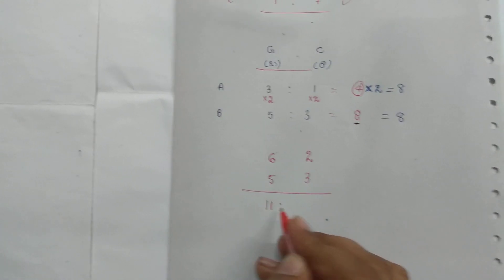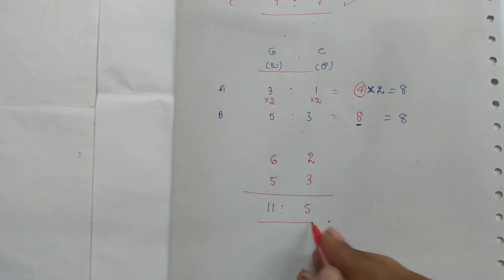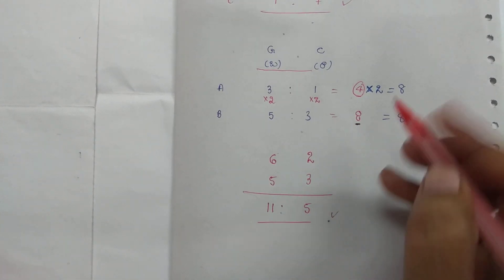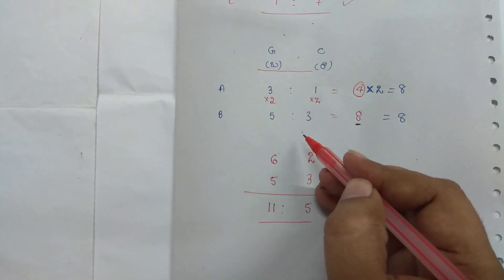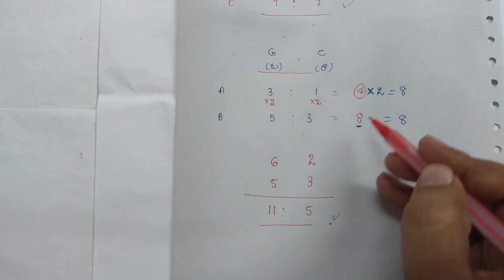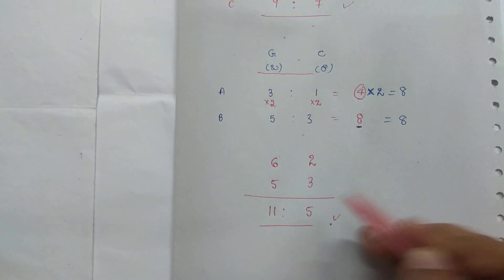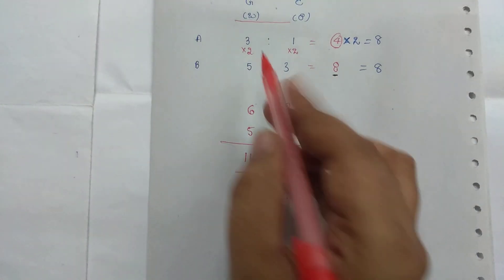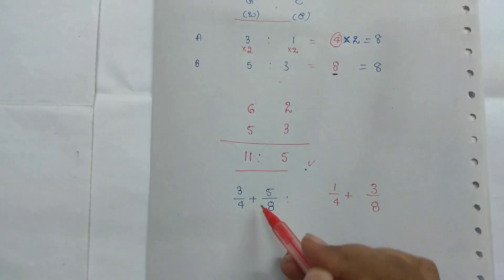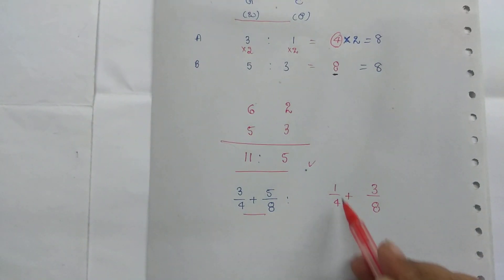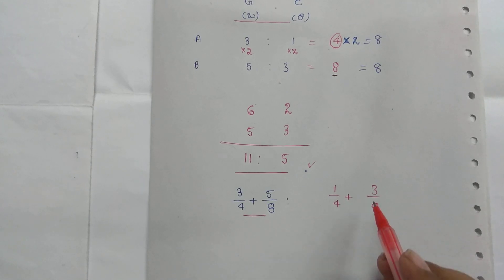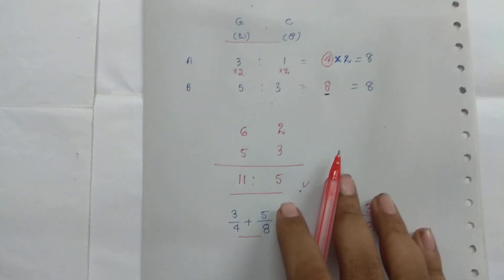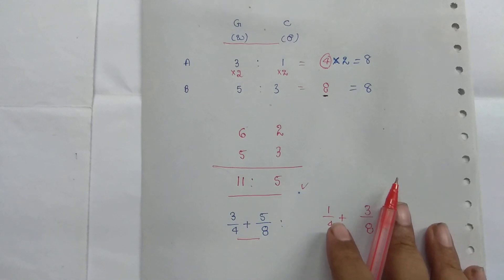6 plus 5 is 10 and 3 plus 2 is 5. So in a single step we have the answer. Direct calculation: plus and equal gives the result. The process is 3 by 4, and 5 by 8. So 5 by 4 plus 3 by 8 gives us the final answer.